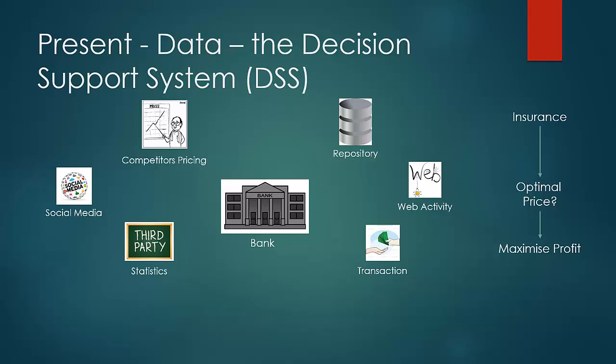The bank would collect all this information, overlay it on each other, and run a statistical algorithm to find the optimal price. In this example, we see how data acts as a decision support system. The more attributes taken into consideration, the better the decision support system — so more data means more accurate predictions.